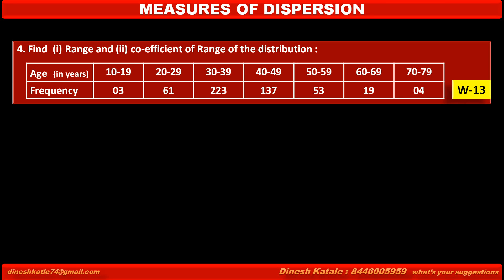Problem 4: Find the range and coefficient of range of the distribution. Ages in years are given in class intervals: 10-19, 20-29, 30-39, 40-49, 50-59, 60-69, and 70-79.